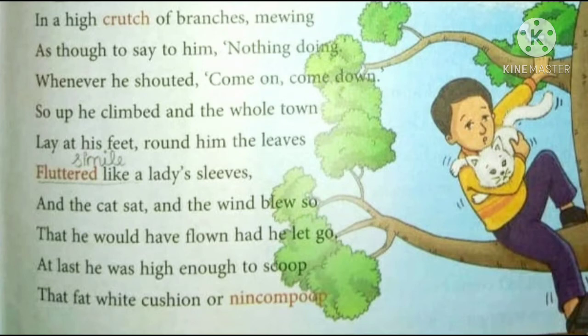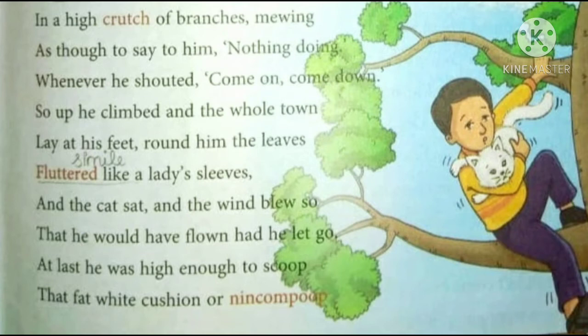And the cat sat and the wind blew, so that he would have flown had he let go. At last, he was high enough to scoop that fat white cushion — or nincompoop. 'That fat white cushion' refers to the cat, and nincompoop means foolish. While the wind was blowing, the leaves and the fur of the cat were also blowing. When the boy lost his patience, he called the cat a nincompoop.